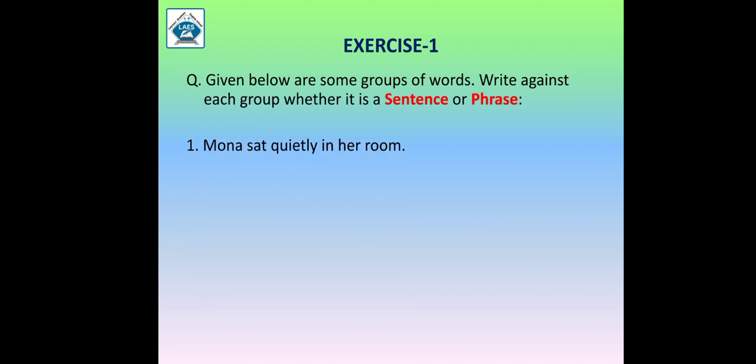Group number 1: 'Mona sat quietly in her room' — identify this. What do you think — is it a sentence or is it a phrase? Yes, you are right — it is a sentence, as we can get a clear sense and idea. Mona अपने room में चुपचाप बैठी — everything is clear, so this is a sentence.